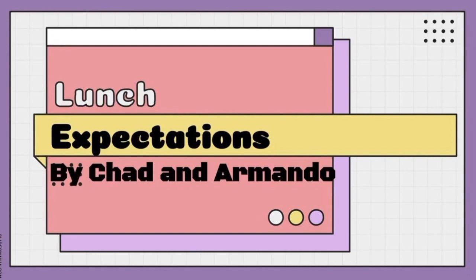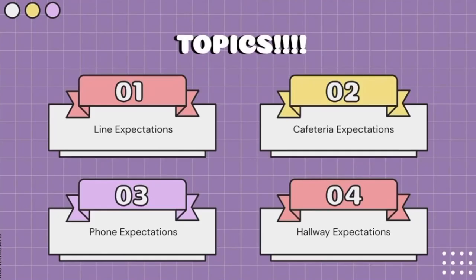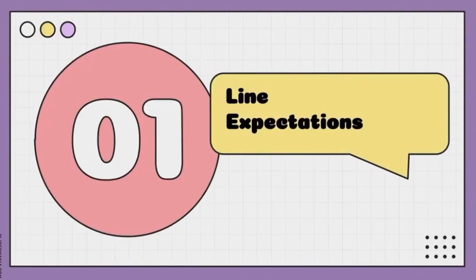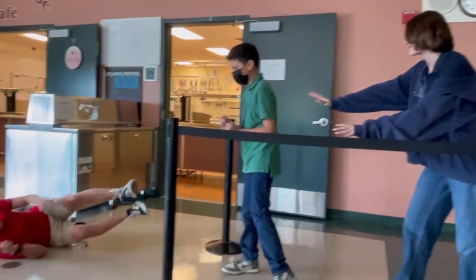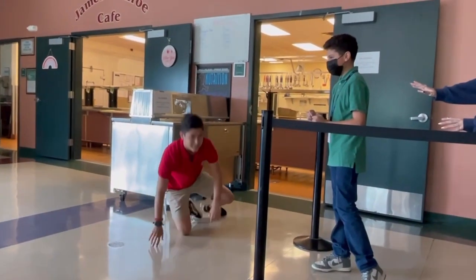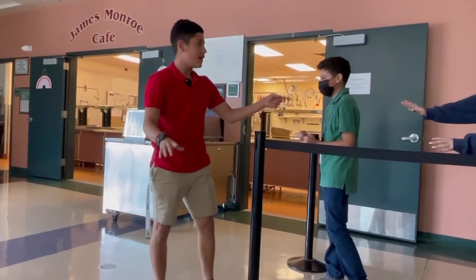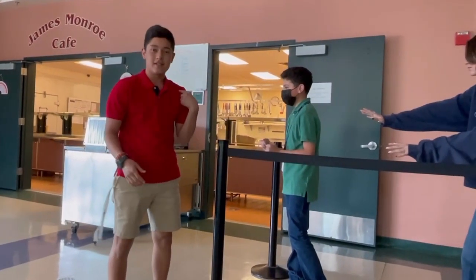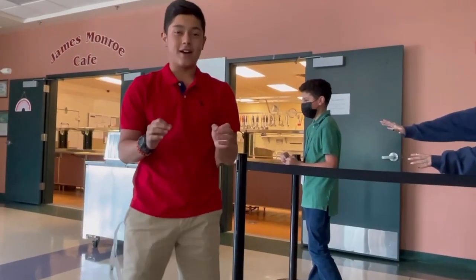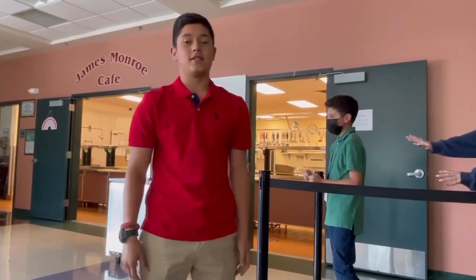Lunch Expectations by Chad and Armando. Number 1: Line Expectations. Wait, did you see what happened there? She just pushed him into me. So we need to not push people, wait in line, and take turns.